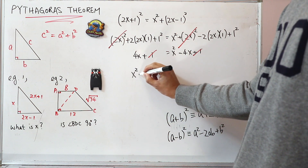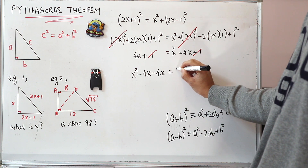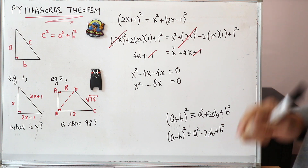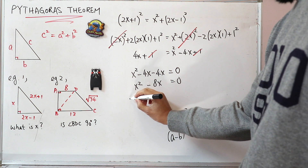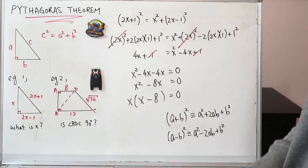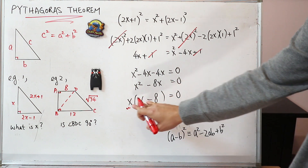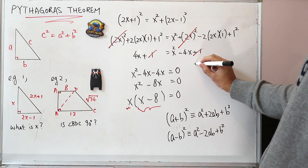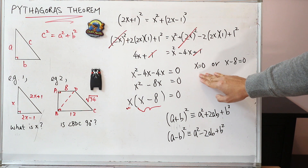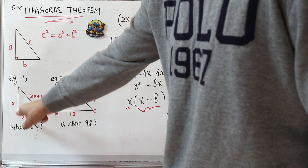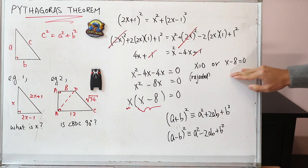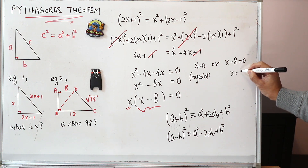So now if we move this 4x from the left-hand side to the right-hand side, it will become x squared minus 4x minus 4x equals 0. So x squared minus 8x equals 0. Now we can do simple factorization because both terms have a common factor of x. So I'll bring the x out: x times (x minus 8) equals 0. Either x equals 0 or x minus 8 equals 0. But x cannot be 0 because that would mean the length of the triangle is 0, which is not acceptable — so x equals 0 is rejected. So x minus 8 equals 0, which means x equals 8, and that's your answer.